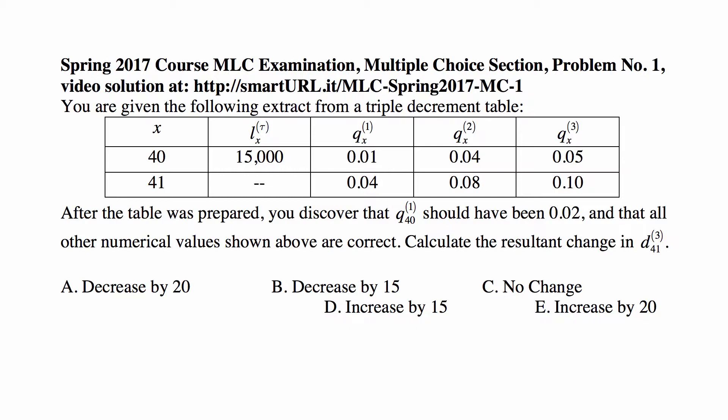The probability of dying from cause one in the first year is 0.01 or 1%, from cause two or decrement two is 0.04 or 4%, and from cause three or decrement three is 5% or 0.05. We don't know the initial size of the population at age 41, it's not given. But we will be able to figure it out because we know how many people leave the population based on these percentages. And then in the second year, the observed probabilities of dying are 0.04, 0.08, and 0.10.